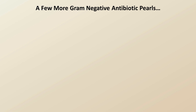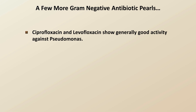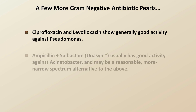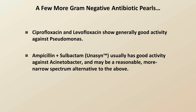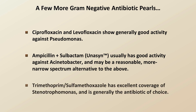There are a few more gram-negative antibiotic pearls of which you should be familiar. As you may recall from lecture 3 on the classification of antibiotics, ciprofloxacin and levofloxacin show generally good activity against Pseudomonas. Also, the combination of ampicillin and sulbactam, marketed under the name Unasyn in the US, usually has good activity against Acinetobacter and may be a reasonable, more narrow-spectrum alternative. Finally, trimethoprim-sulfamethoxazole has excellent coverage of Stenotrophomonas and is generally the antibiotic of choice when no contraindications exist, such as renal failure.